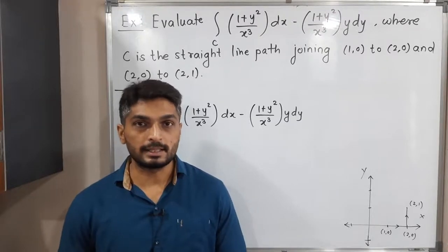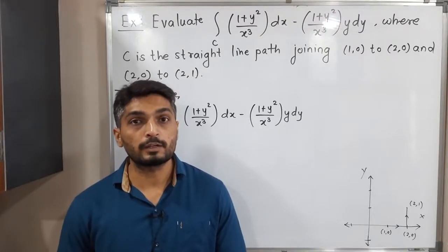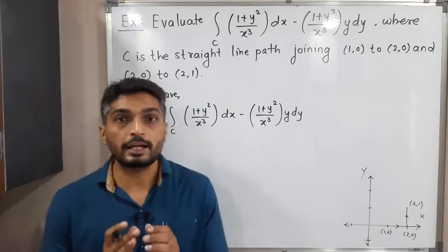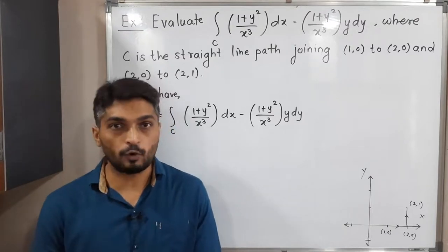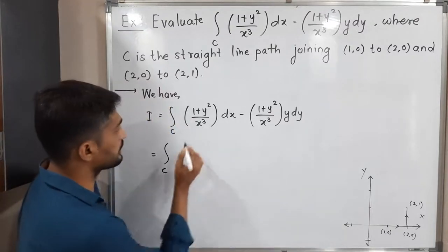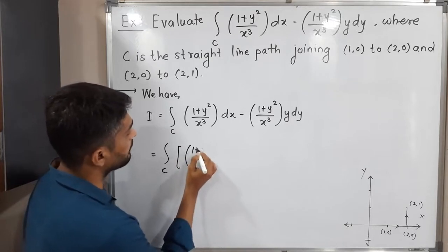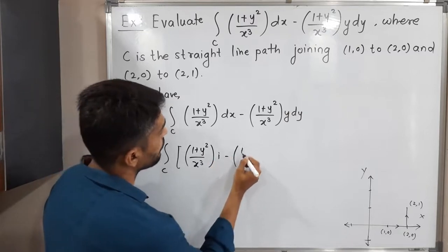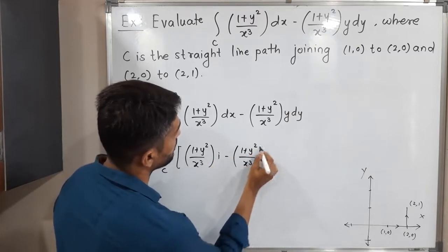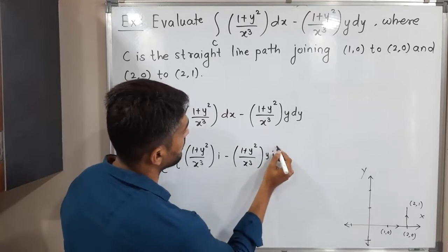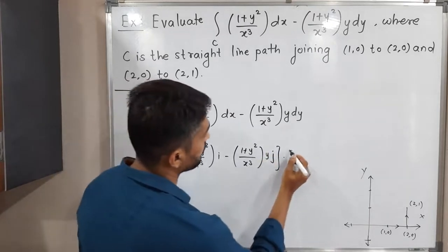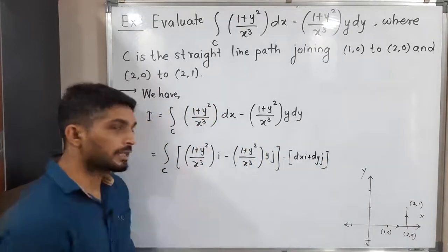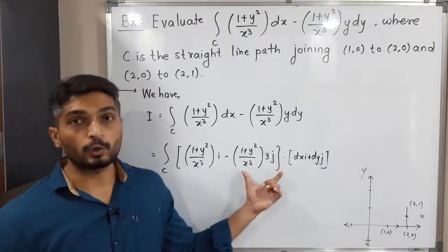Hi everyone, let us discuss this example. In this example we have to find a value of a line integral of a vector field. They have given the integral in this way, so we will try to express it in its standard form. This is equal to integration over c, and the same thing can be written as a dot product of two vectors.